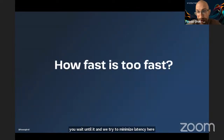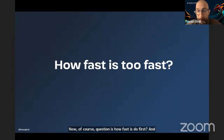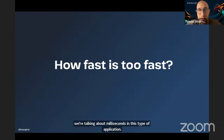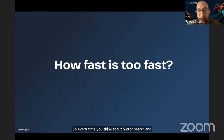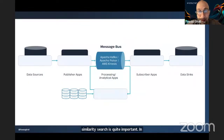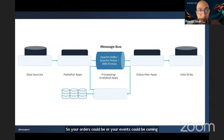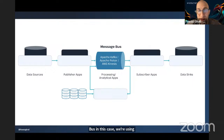We try to minimize latency here. The question is: how fast is too fast? We're talking about milliseconds in this type of application. Every time you think about vector search and similarity search, you need to factor in time decay. Having Hazelcast as a platform for your similarity search is quite important in terms of minimizing latency. Your events could be coming from a data source, ingested into a message bus — Kafka, Pulsar, or AWS Kinesis — and then you do data enrichment inside Hazelcast, decoupling your data source and your data sync.